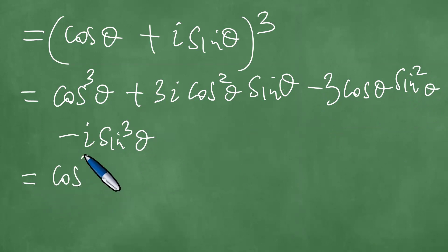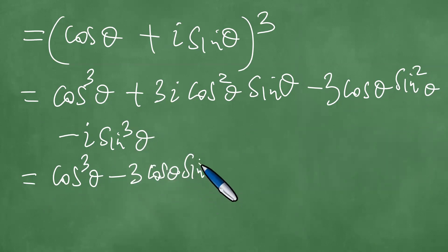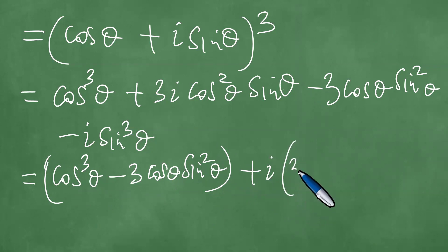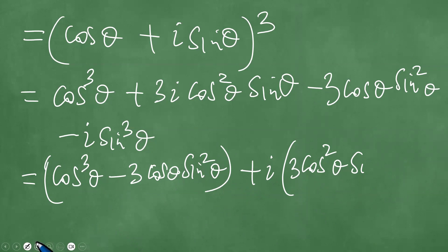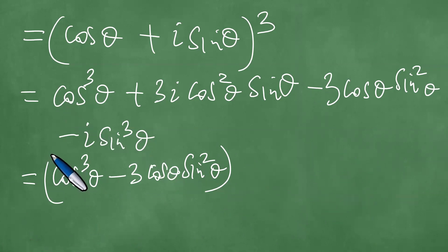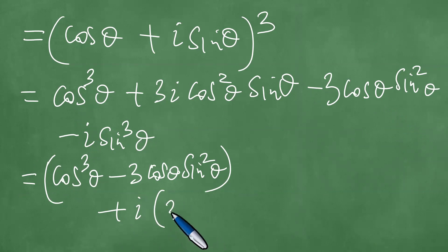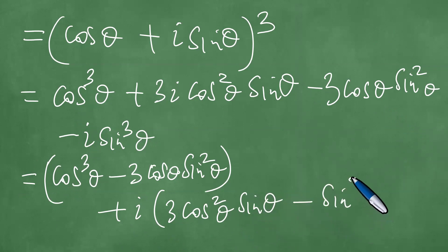Now we're looking at the real part. This gives cos³θ minus 3cosθ·sin²θ, and we have plus i times (3cos²θ·sinθ minus sin³θ). So we have grouped the real parts and the imaginary parts.